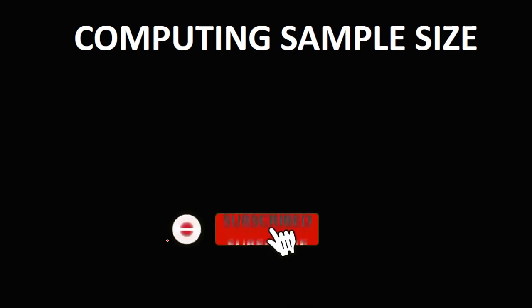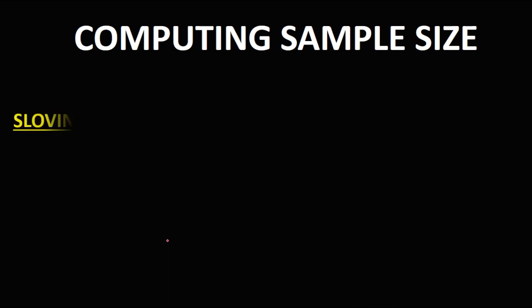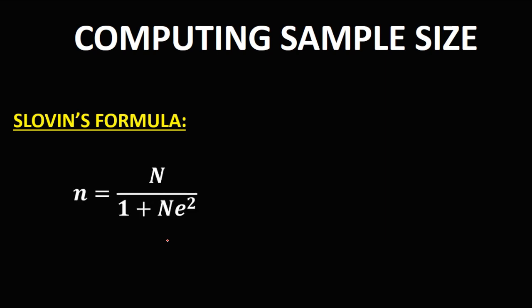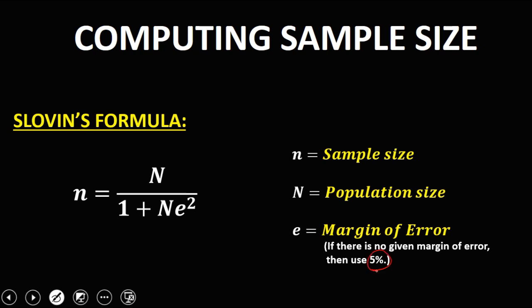Let's have this topic: computing the sample size using Sloven's formula. In the formula, small n is the sample size, big N is the population size, and e is the margin of error. If there's no given margin of error, use 5%.